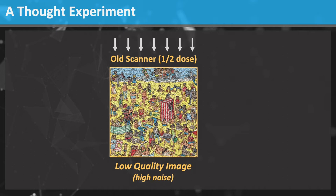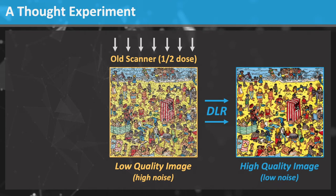Your radiologist would have to spend a lot of time looking at these images and might miss an important finding. However, your facility had a smart administrator that installed Deep Learning Reconstruction software for CT image reconstruction. The DLR is applied to your mom's images, and the radiologist views high quality CT images with low noise. She actually was exposed to less radiation and still gets this high quality image. The radiologist finds Waldo.